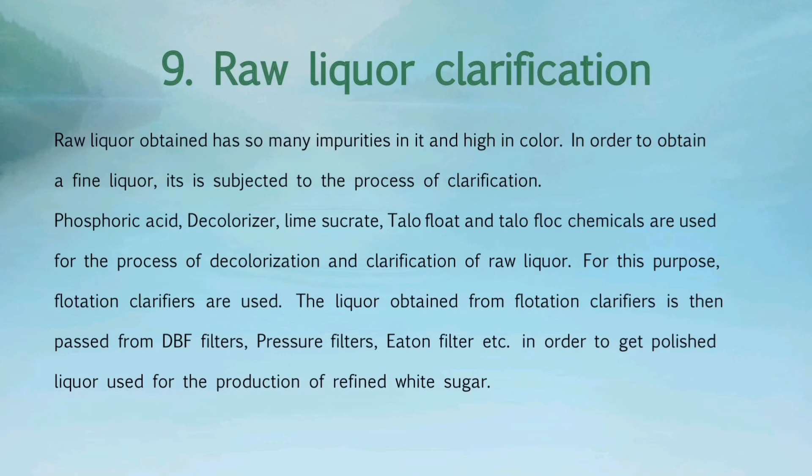Phosphoric acid, decolorizer, lime sucrate, tallow float, and tallow flock chemicals are used for the process of decolorization and clarification of raw liquor. For this purpose, flotation clarifiers are used. The liquor obtained from flotation clarifiers is then passed through DBF filters, pressure filters, and eaten filter, in order to get polished liquor used for the production of refined white sugar.